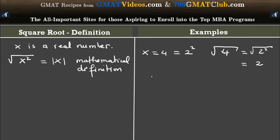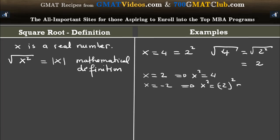You know that if x equals 2, then x squared equals 4. And when x equals negative 2, then x squared equals negative 2 squared, which is also equal to 4. But by definition, the square root of 4 is only equal to 2. It is not equal to 2 or negative 2. This is a mathematical definition.